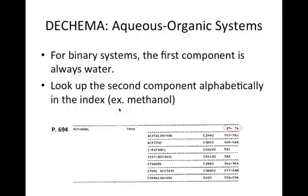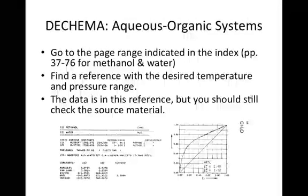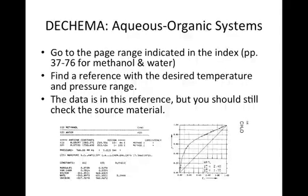For aqueous organic systems data collection, water is always first, so for binary systems you only have to find the second component — in this example, methanol. The rightmost column gives you the page range, circled in red, for the system in question. Once you get the page range, you have to browse and look at the experimental conditions to find a set of experimental data that fits your process. Although data tables are reproduced in this reference, you should still look up the original article and check for yourself.